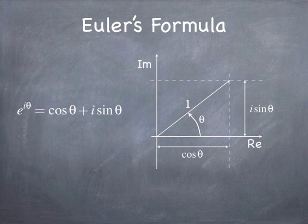You can see that from the expression for Euler's formula, but you can also see it from the geometry drawn on the board. You can think of a complex exponential as a phasor that makes an angle theta with respect to the real axis. It looks a little bit like a vector: the real part is like an x component, and the imaginary part is like a y component.